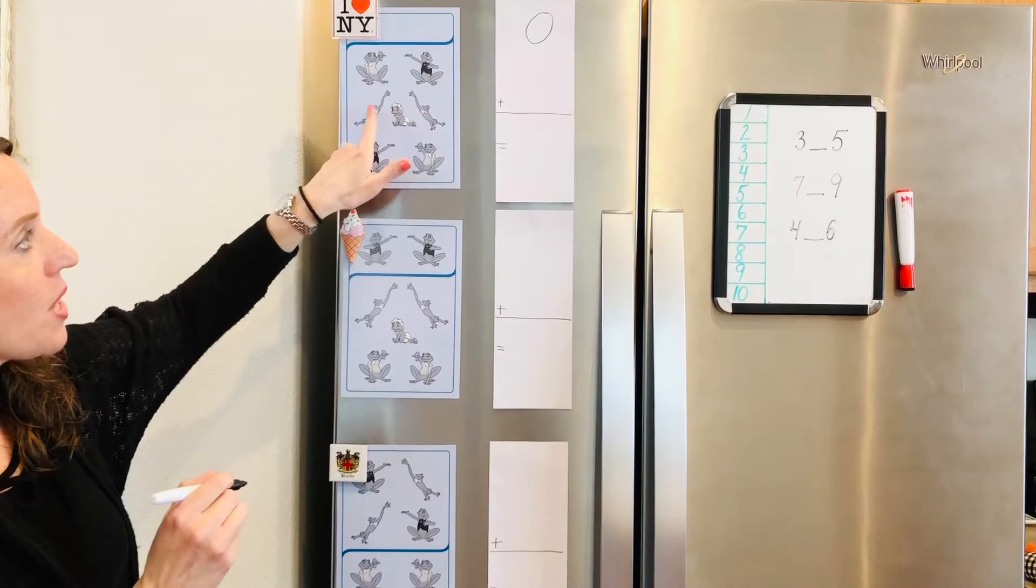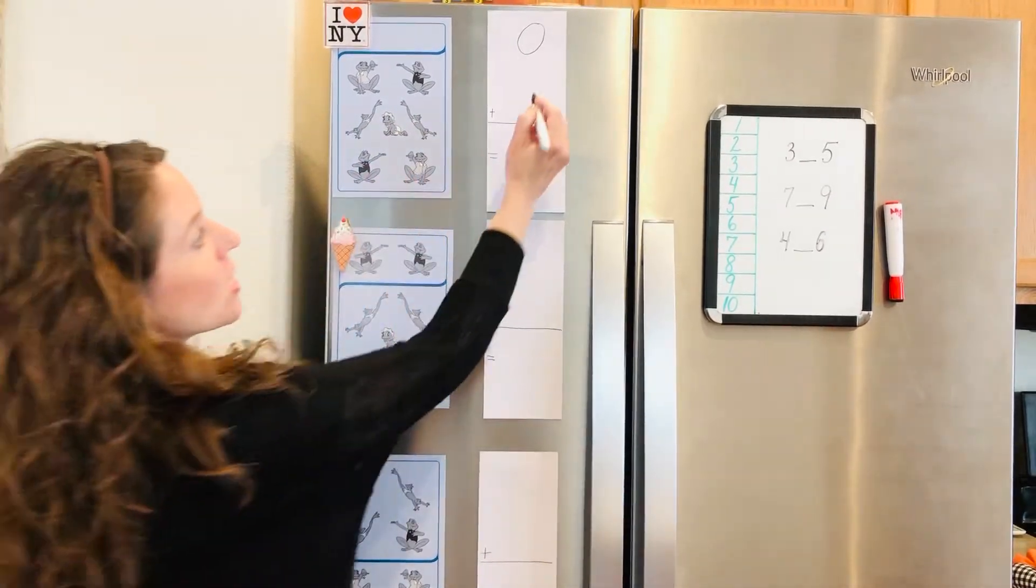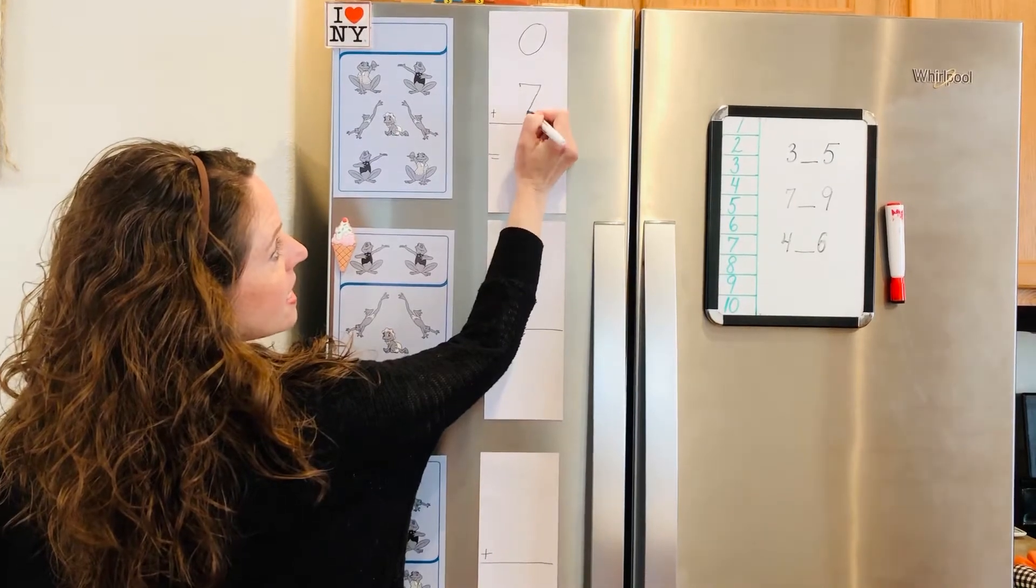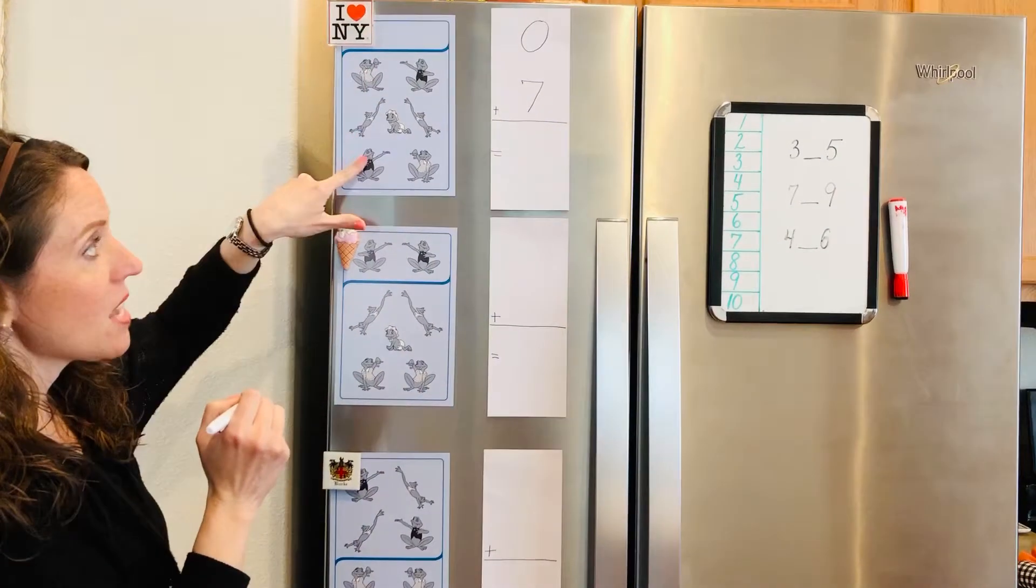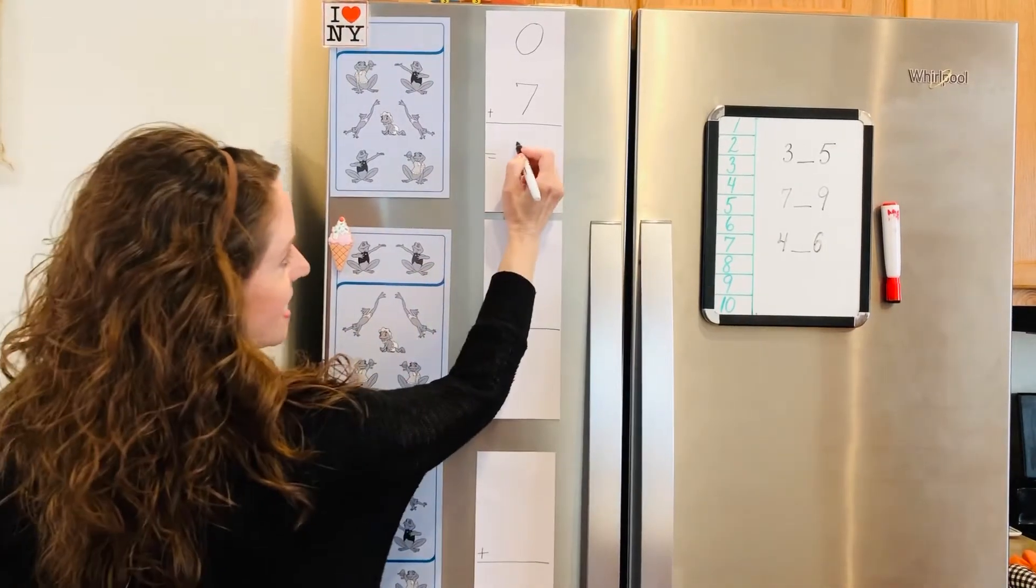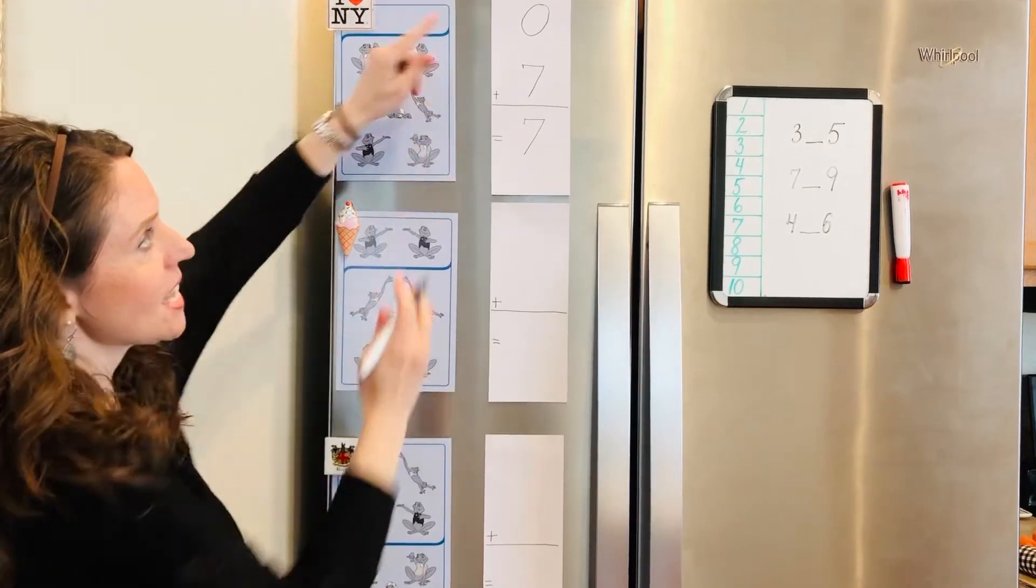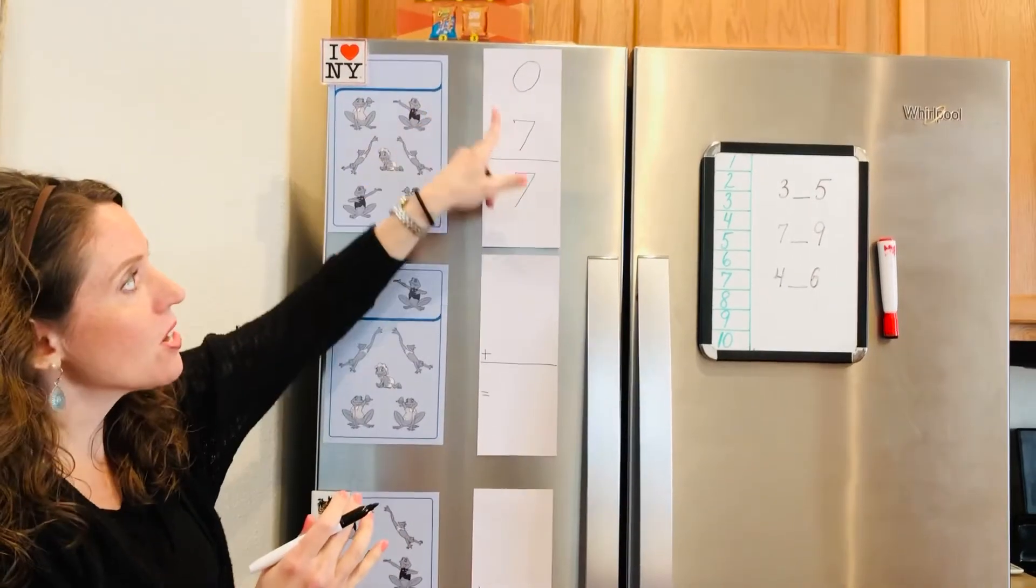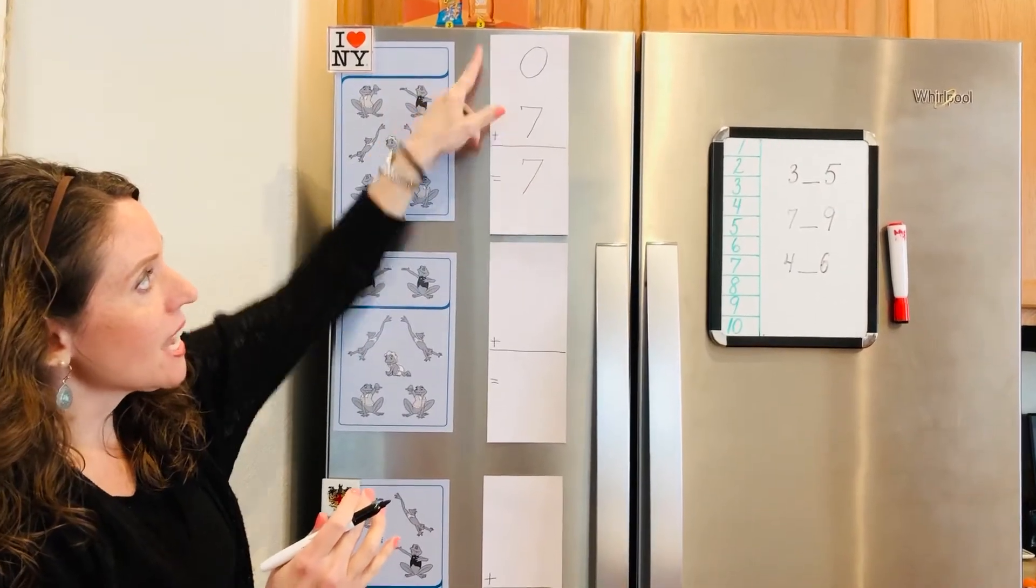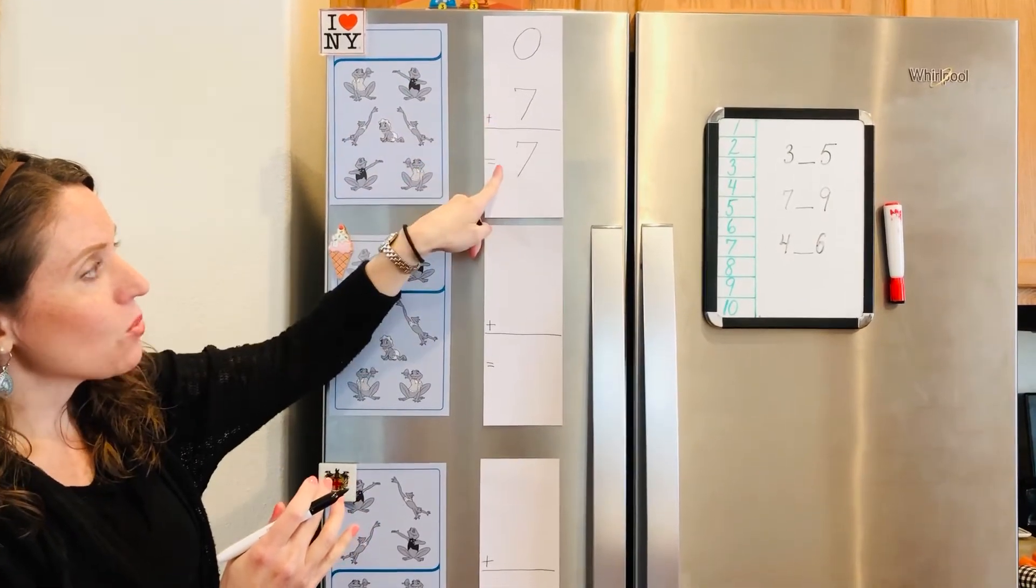One, two, three, four, five, six, seven. So we would say that zero frogs plus seven frogs equals, it is still seven frogs. It's like they're looking in the mirror and seeing themselves. Pretend that's a mirror. The number's looking in it, seeing itself. Zero plus seven equals seven.